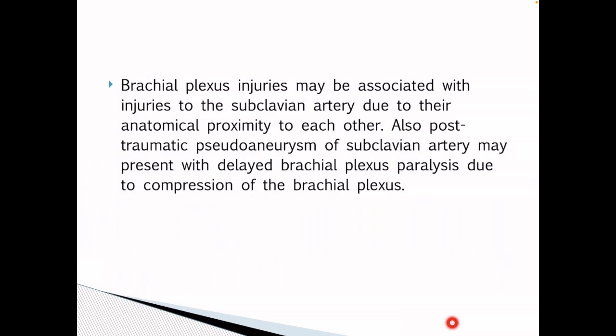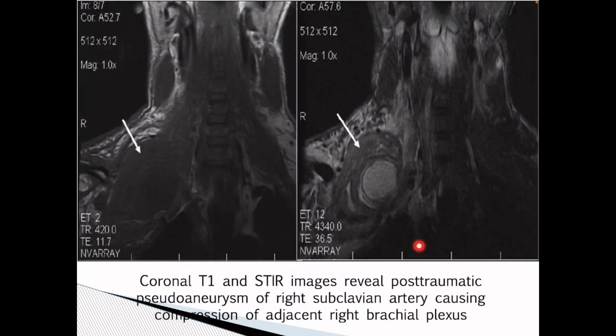Brachial plexus injury may be associated with injury to the subclavian artery due to their anatomical proximity to each other. Also, post-traumatic pseudoaneurysm of the subclavian artery may present with delayed brachial plexus paralysis due to compression of the brachial plexus. These coronal T1 and STIR images reveal a post-traumatic pseudoaneurysm of the right subclavian artery causing compression of the adjacent right brachial plexus.